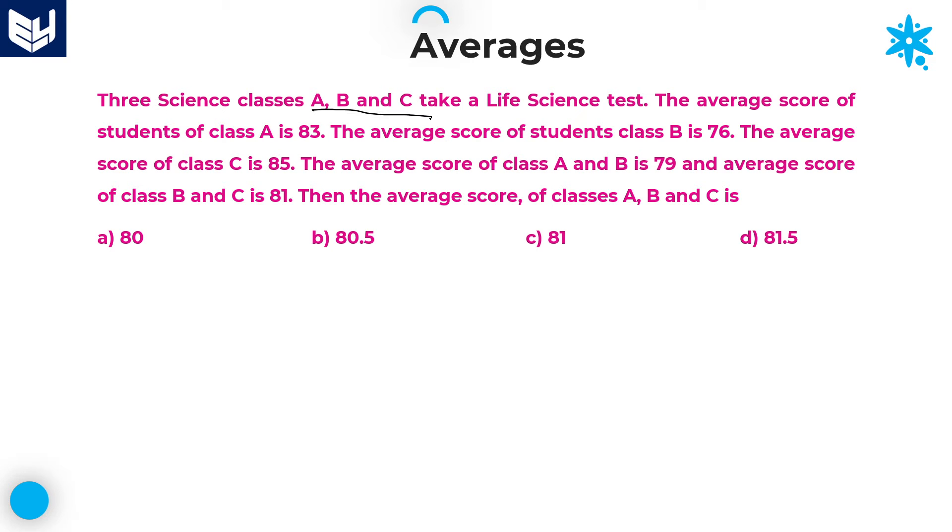Three science classes A, B, C take a life science test. The average score of the students of class A is 83 and that of class B average 76. Class C average 85. That is individual average. And after that, the average score of A and B is 79. Average score of B and C is 81. Now the question is, what is the average score of all the classes A, B, C? That is the question we need to find out.